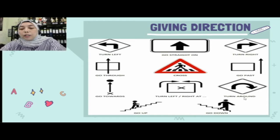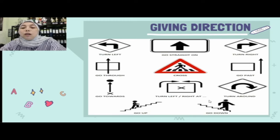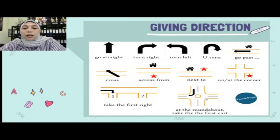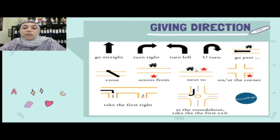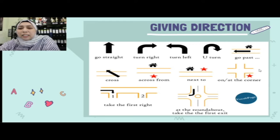Turn around artinya berputar balik. Kalau ada tanjakan: go up; ada turunan: go down. Across from berarti di seberang — kamu harus menyeberang dulu. Next to berarti sebelah-sebelahan — misalnya bioskopnya ada di sebelah pasar. On atau at the corner berarti ada di pojok jalan — bisa pojok kiri atau kanan.